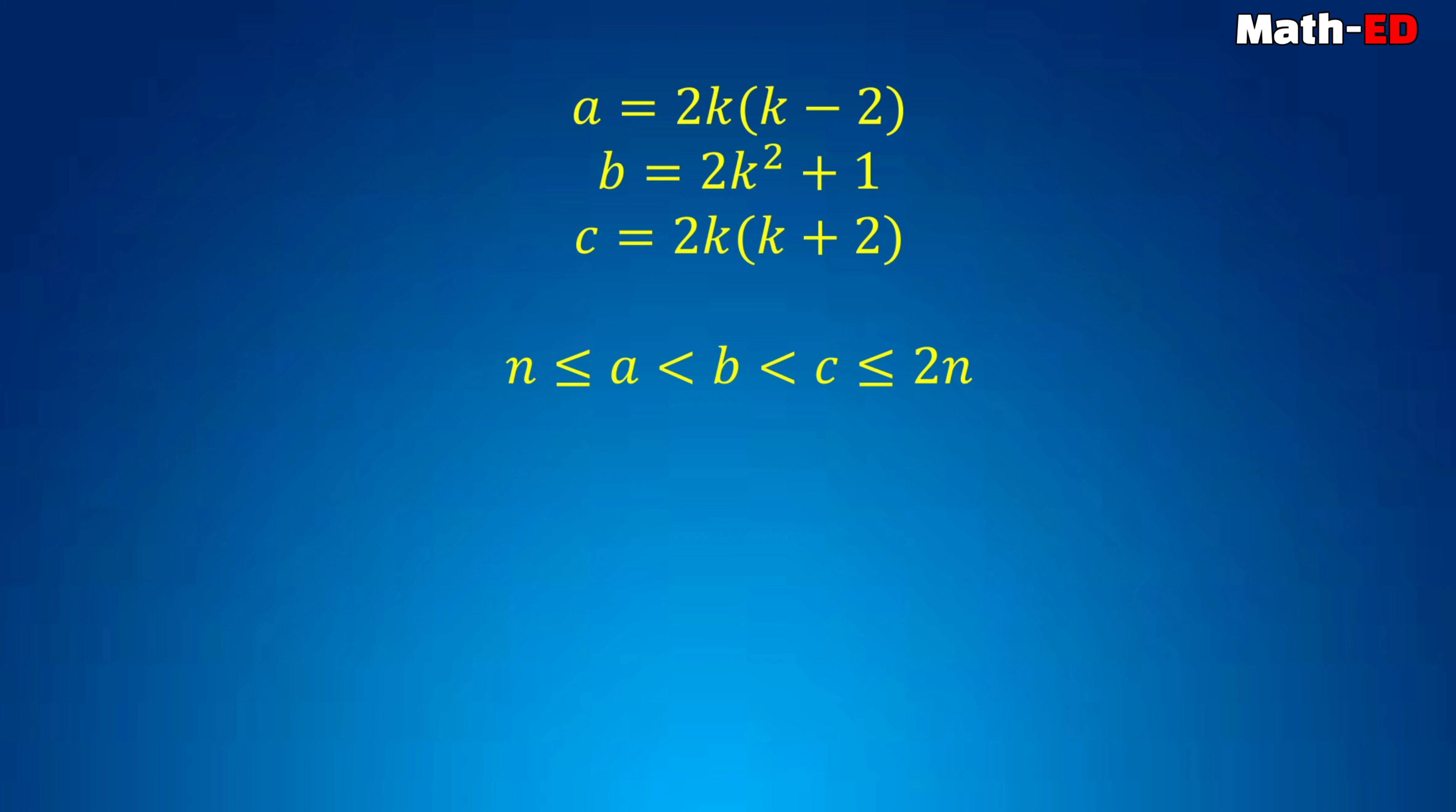We can say that n is strictly less than c, which is 2k times k plus 2, and this is less than or equal to 2n.